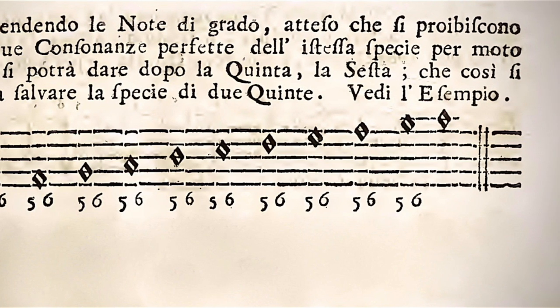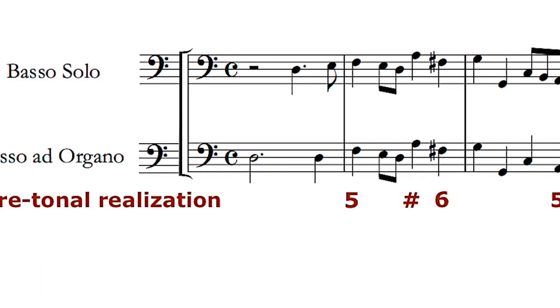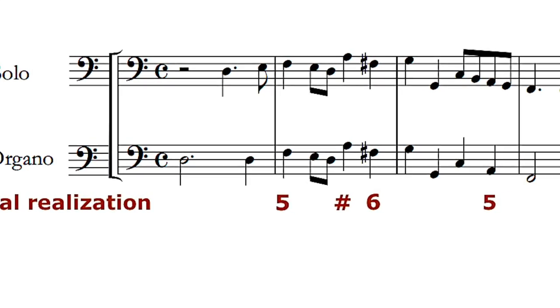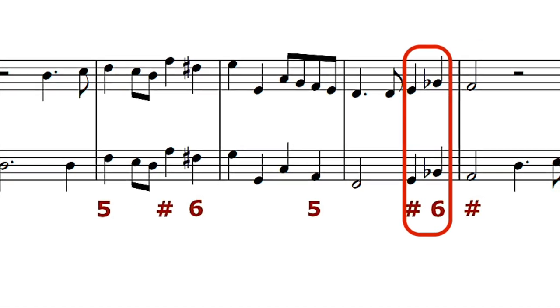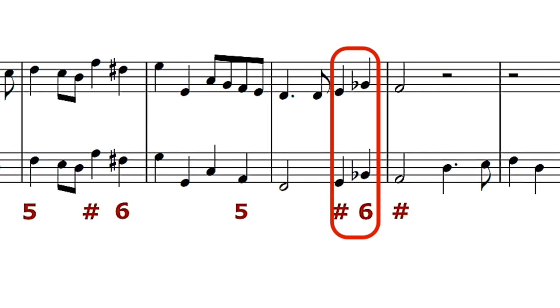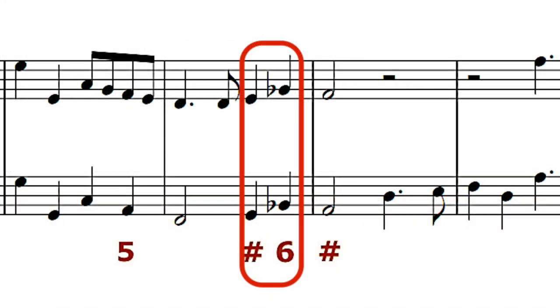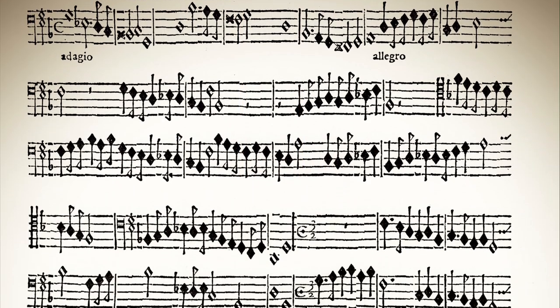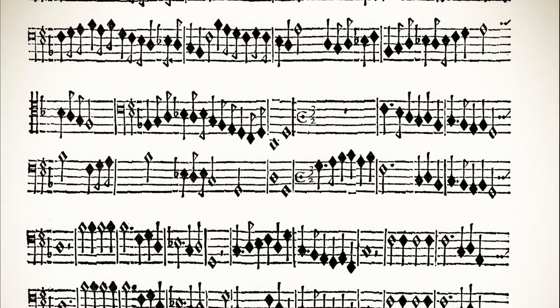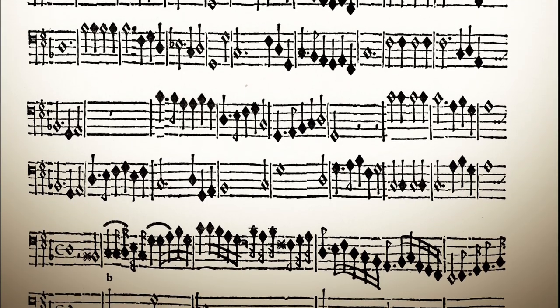We can use passing notes between any third in a realisation, as you can hear in the pre-tonal version. Another idiomatic element are the false relations, typically used by Frescobaldi in cadences. In bar 4 of my realisation I played such a false relation combined with passing notes. The great advantage of playing from an unfigured bass is that, to a certain extent, it allows us to choose for a particular voice leading — for example these false relations. We may in some cases even decide whether we play a major or minor third or sixth.